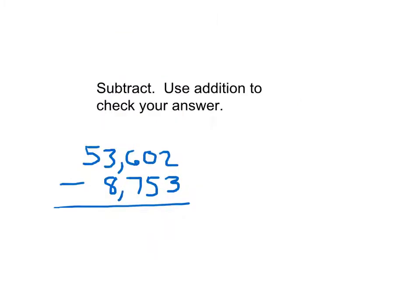Here it says to subtract and use addition to check your answer. So subtract, this means to figure out the exact answer. And then we're using the inverse operation of subtraction, which is addition, to check our answer. So let's get our exact answer first. 2 minus 3 can't do that. Can't regroup from the tens place. So the 6 becomes a 5. So the 0 can become a 10. It becomes a 9. So that 2 becomes a 12. 12 minus 3 is 9. 9 minus 5 is 4. 5 minus 7, I cannot do that. So I regroup. 2 minus 8, I can't do that. 5 becomes a 4. So the 2 can become a 12. 12 minus 8 is 4. And that's that answer right there.